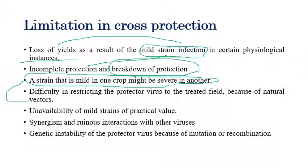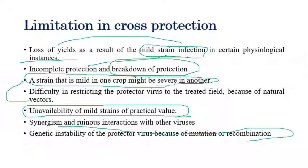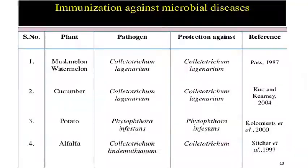Further limitations include unavailability of mild strains suitable for practical use, making it difficult to find appropriate mild strains for cross protection. Synergism or interactions with other viruses can also occur. Additionally, genetic instability of the protector virus — through mutation or recombination — can cause the attenuated virus to become severe inside the plant.